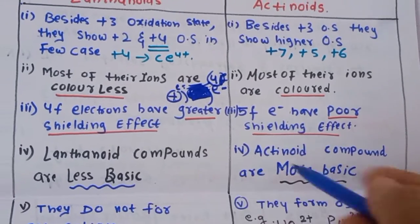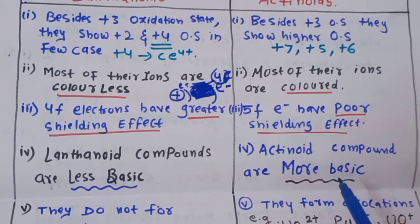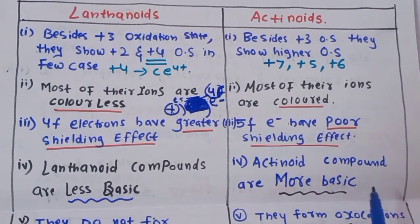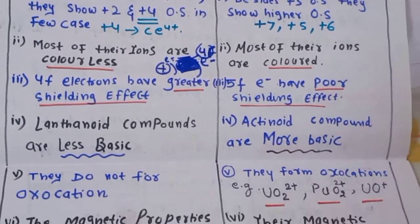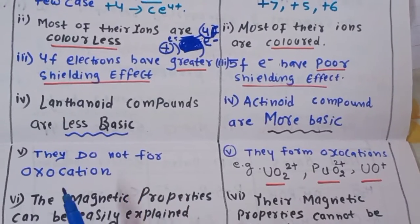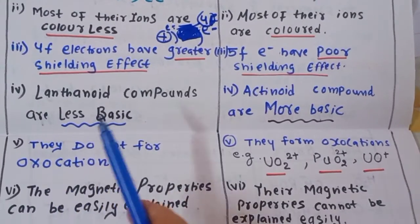As a consequence of the shielding difference, lanthanide compounds are less basic in nature, while actinide compounds are more basic in nature.